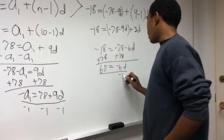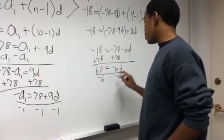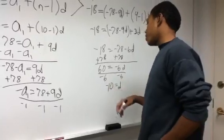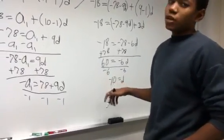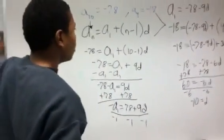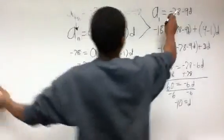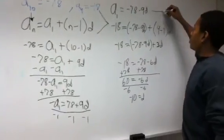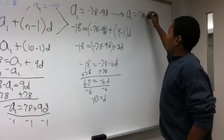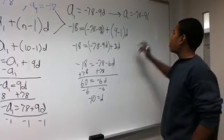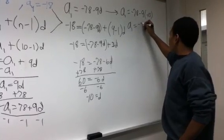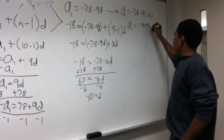Dividing both sides by negative 6, we get d equals negative 10, since 60 divided by negative 6 equals negative 10. Now we go back to our a sub 1 expression: a sub 1 equals negative 78 minus 9 times negative 10, which equals negative 78 plus 90.